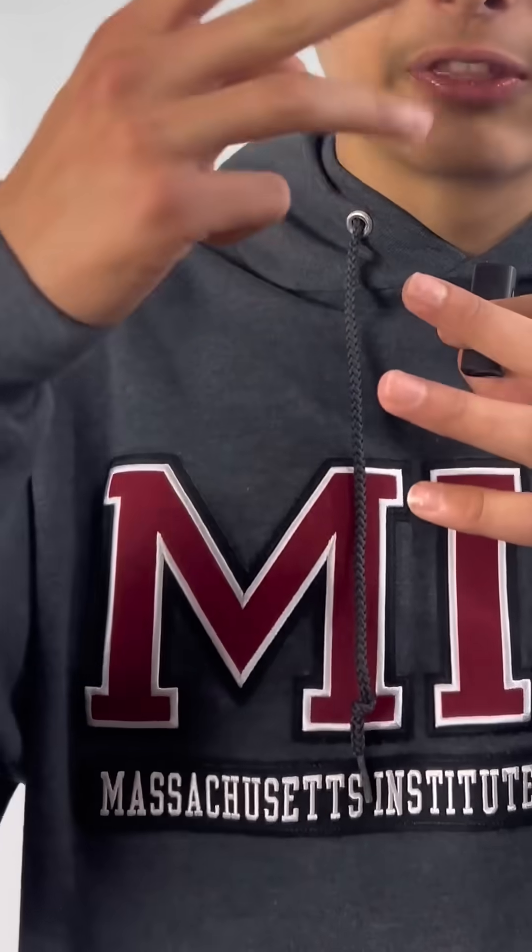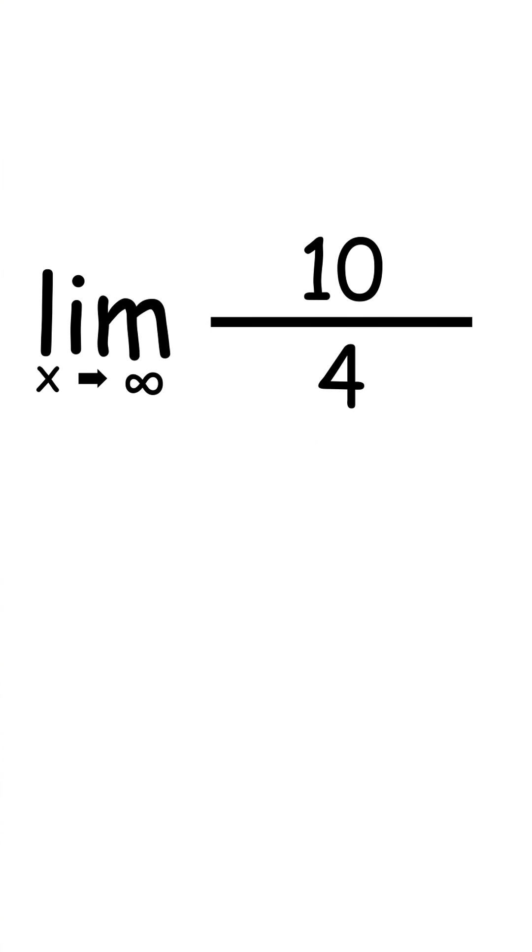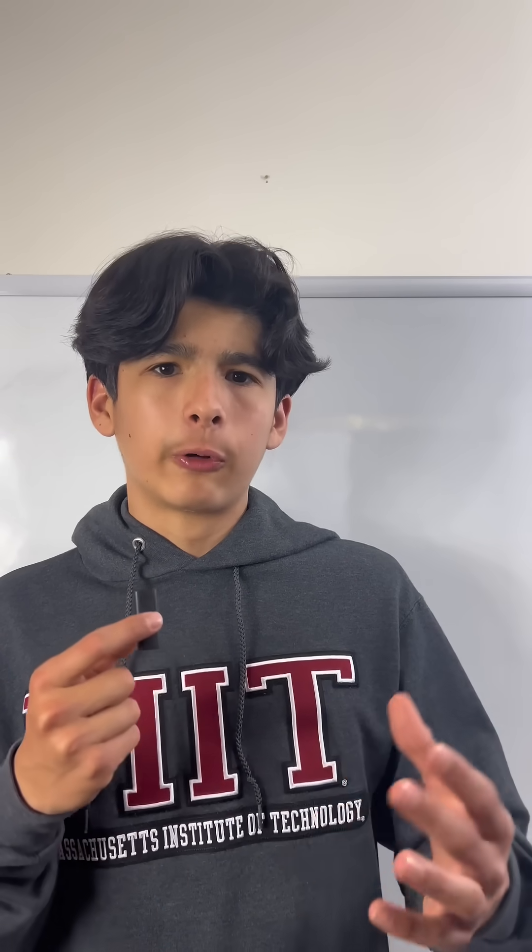But what's great about L'Hopital's rule is you could use it over and over again. You can take the first, second, third derivatives. Keep on going until you get a non-indeterminate form. So if you take the derivative again, you'll get this, 10 over 4. Now you could just simplify that to 5 over 2, and that would be the correct answer for the limit.